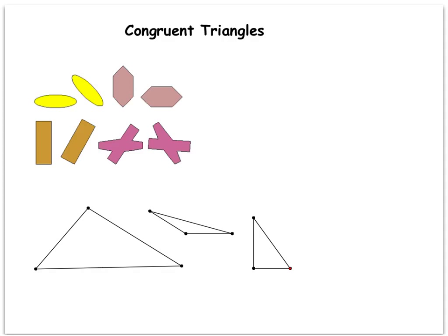So the first thing we want to focus on is congruent figures. As you can see, these two figures, these yellow ovals, are congruent. They're oriented differently, but they're the same shape and the same size. It goes the same for all four of these different pairings down here.